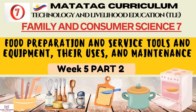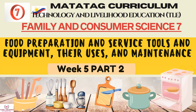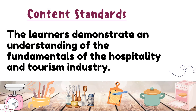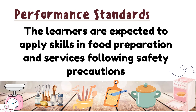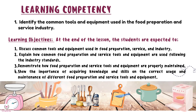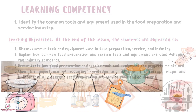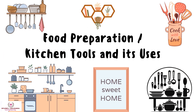Technology and Livelihood Education, Family and Consumer Science for Grade Seven, Quarter Three, Week Five, Part Two. Our topic is food preparation and service: tools and equipment, their uses and maintenance. The content standard is that learners demonstrate an understanding of the fundamentals of the hospitality and tourism industry. The performance standard is that learners are expected to apply skills in food preparation and services following safety precautions. The learning competency covers food preparation, kitchen tools, and their uses.